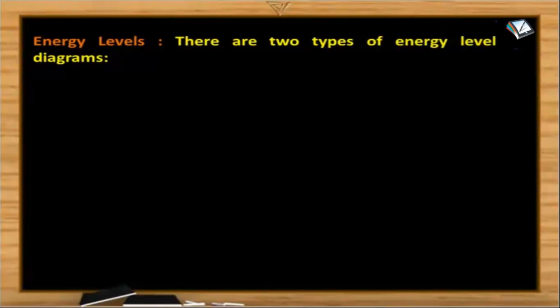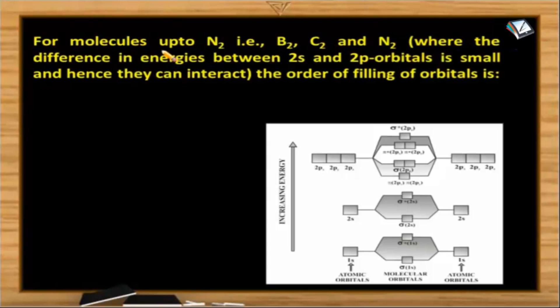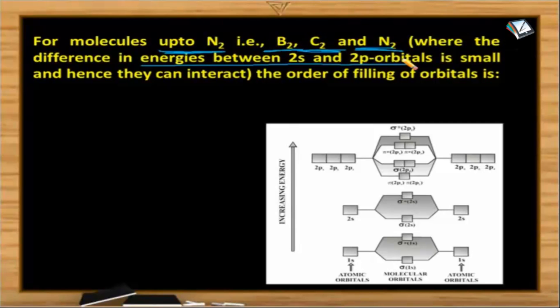Now let's discuss completely about the energy levels in the molecular orbitals. There are two types of energy level diagrams for molecules up to nitrogen, that is B2 molecule, C2 molecule, N2, etc., where the difference in energies between 2s and 2p orbitals is small and where they can interact.